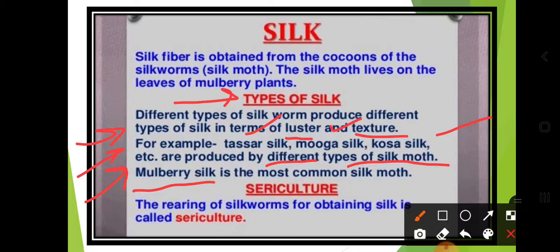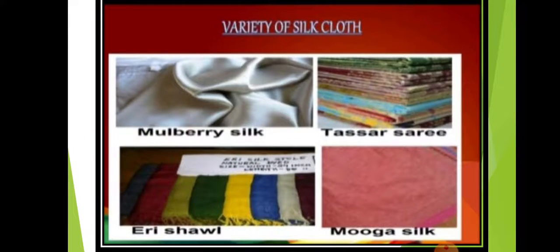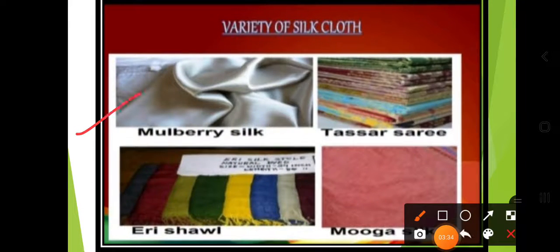The next concept is sericulture. The rearing of silk worms for obtaining silk is called sericulture. So sericulture is the process of rearing silk worms from cocoons to obtain silk. There are lots of applications of sericulture.